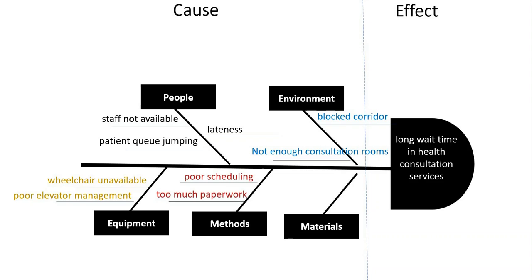Next, Method: too much paperwork for nurses, and poor scheduling. These are the causes for method. For Material: the patient has not brought their past medical history, so the doctor has to write it again. Now you can see all the causes in a nice visual diagram known as the Ishikawa diagram for problem analysis.